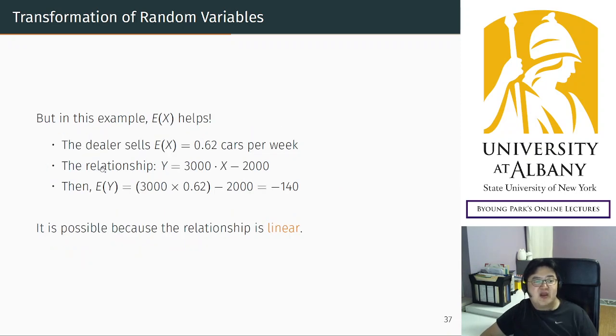However, in some special cases, it helps. Like the original variable's expectation helps to calculate the new variable's expectation. For example, look at this. The dealer, car sales agent, sells 0.62 cars per week. This is the mean of the original random variable. And we know that the new net profit is calculated this way: net profit is 3000 times X minus 2000.